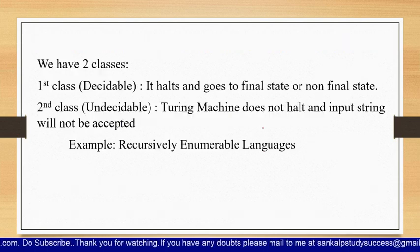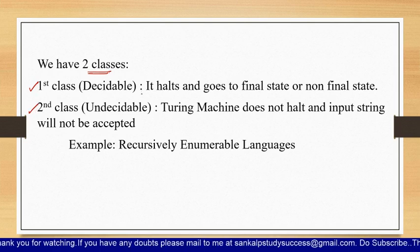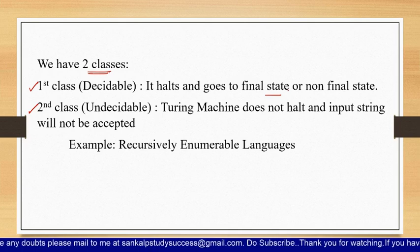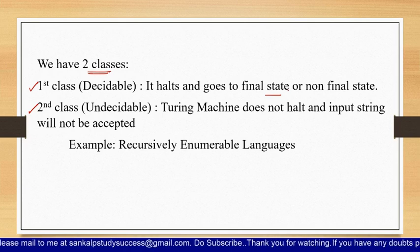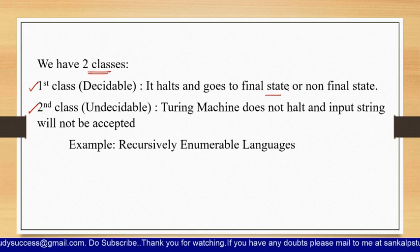Now coming to the first topic, we have two different types of classes. The first one is the decidable one and the second one is the undecidable one. A Turing machine is decidable if it halts and goes to either the final state or the non-final state — the ultimate goal is that it should halt. Any Turing machine which doesn't halt is undecidable, because if it is not halting at all, the input string is not accepted.